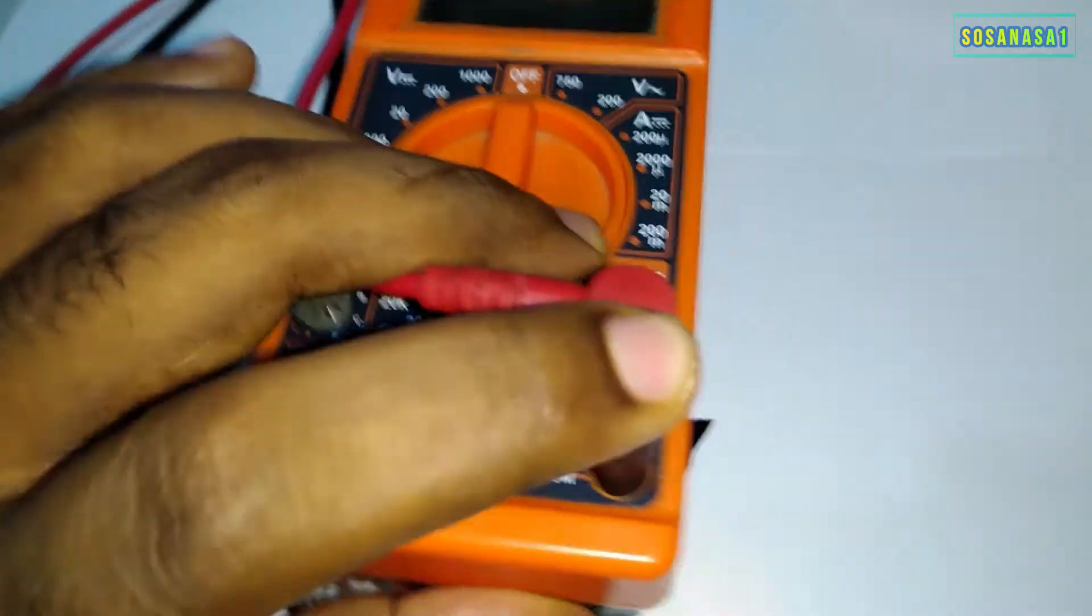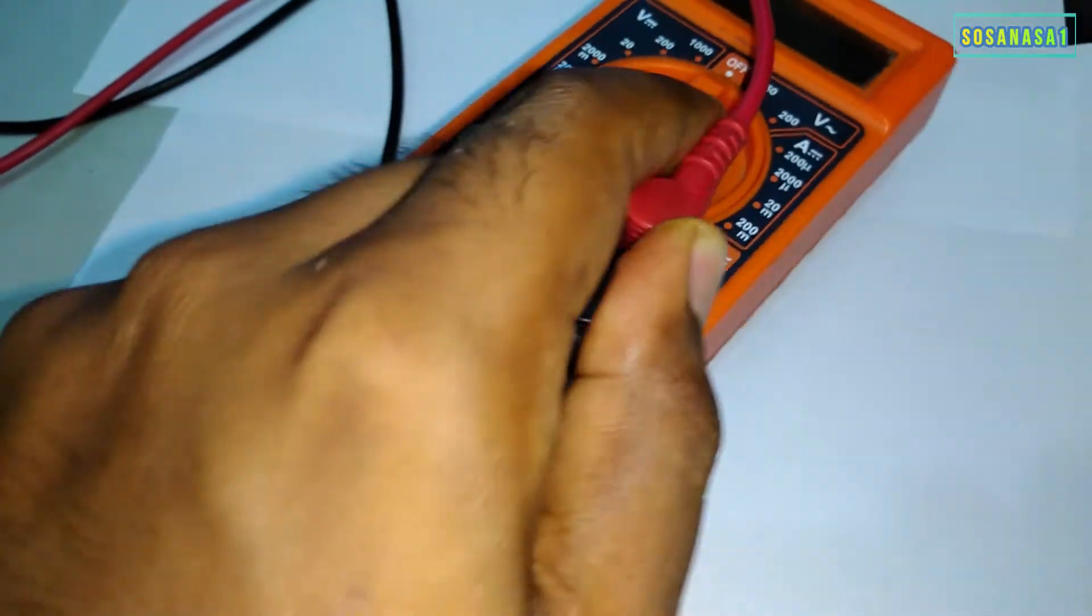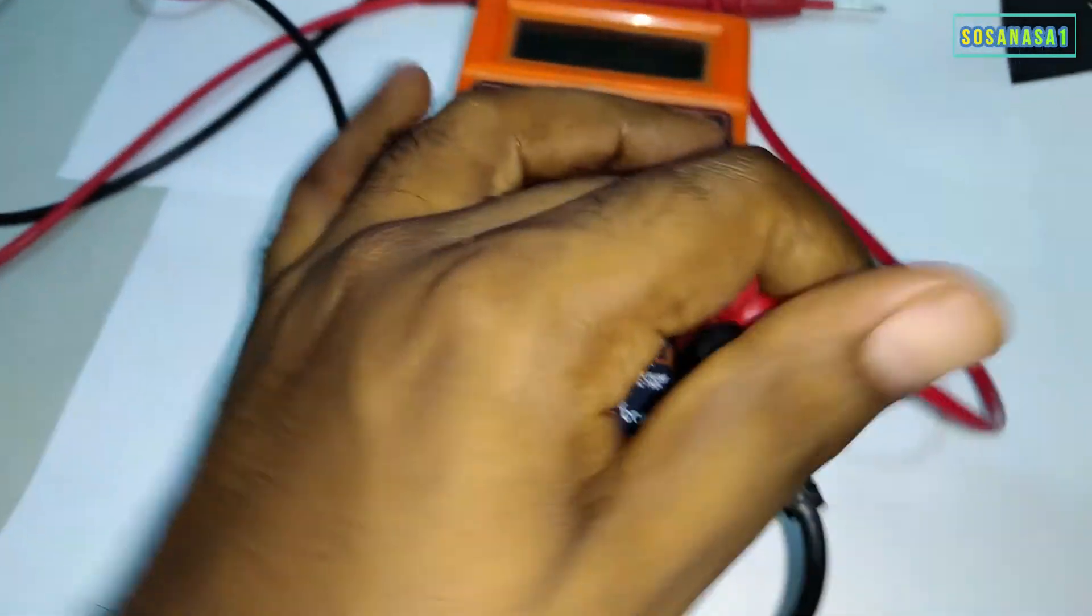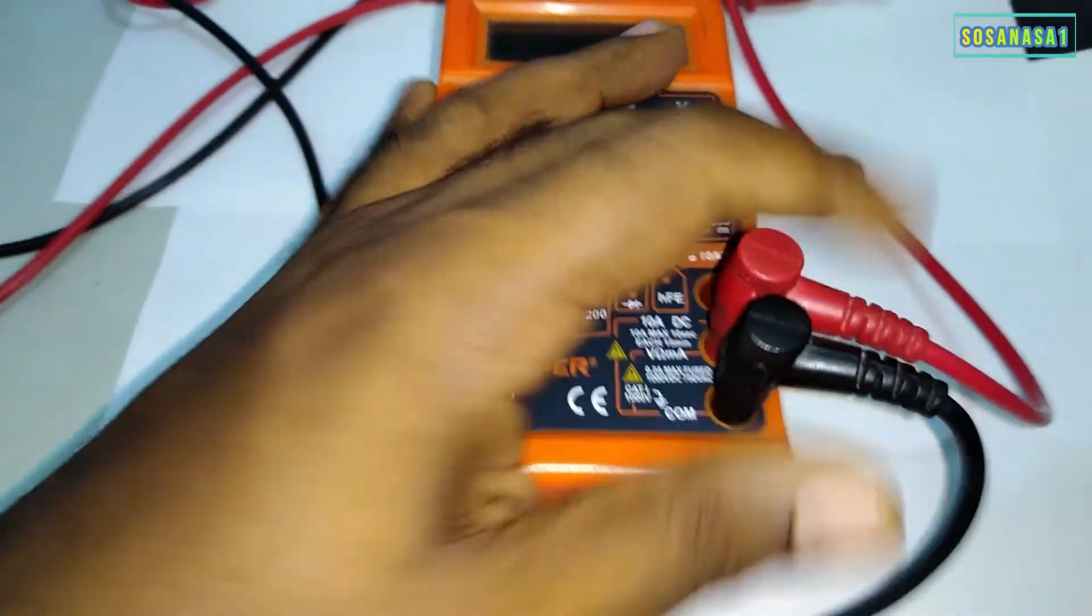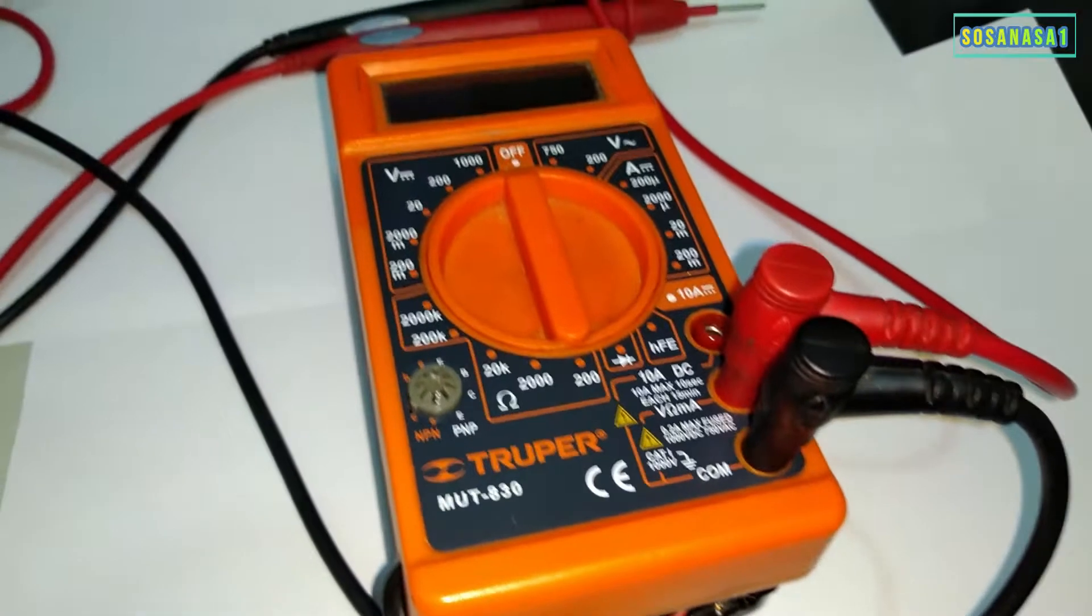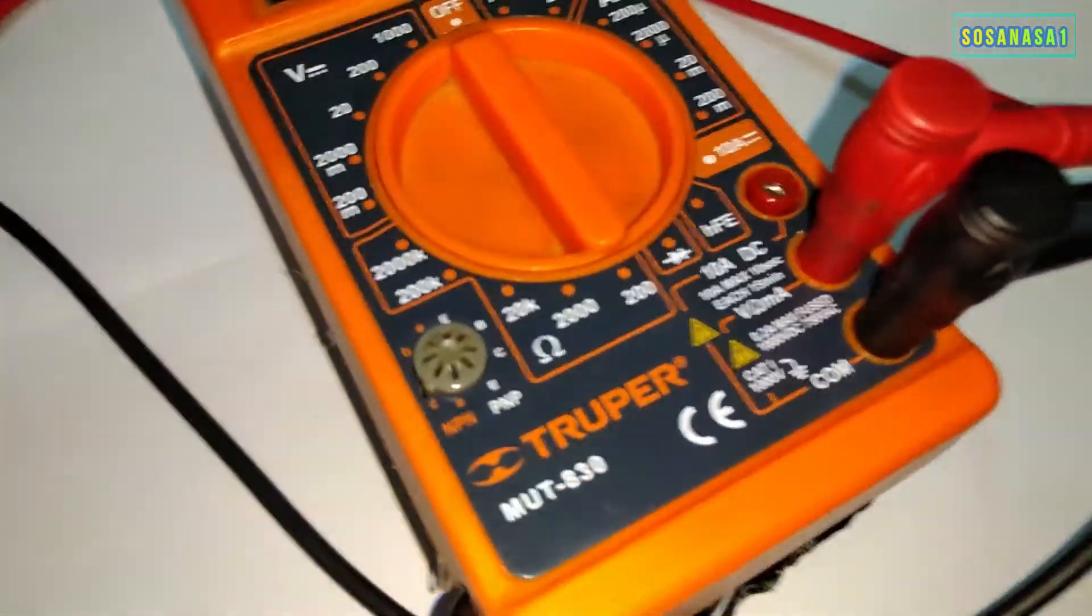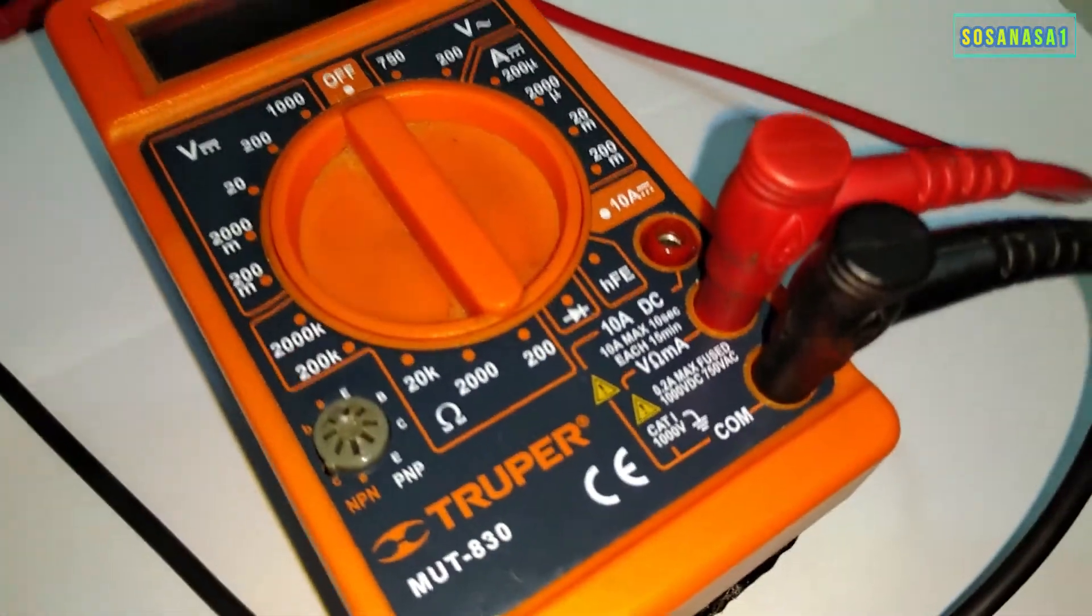We move to this side so we can see what is written under the surface of the multimeter.